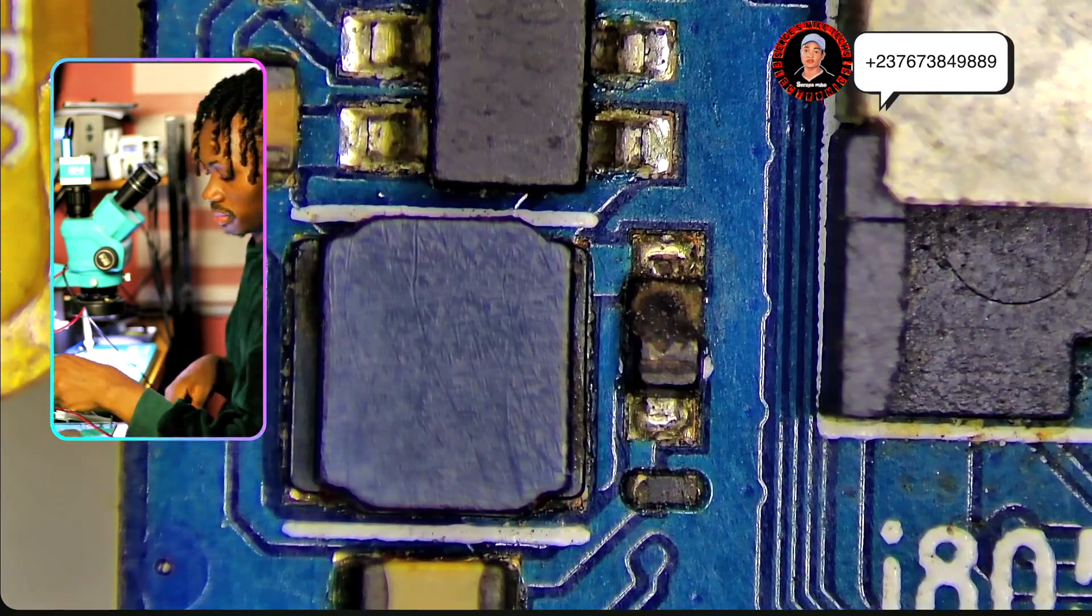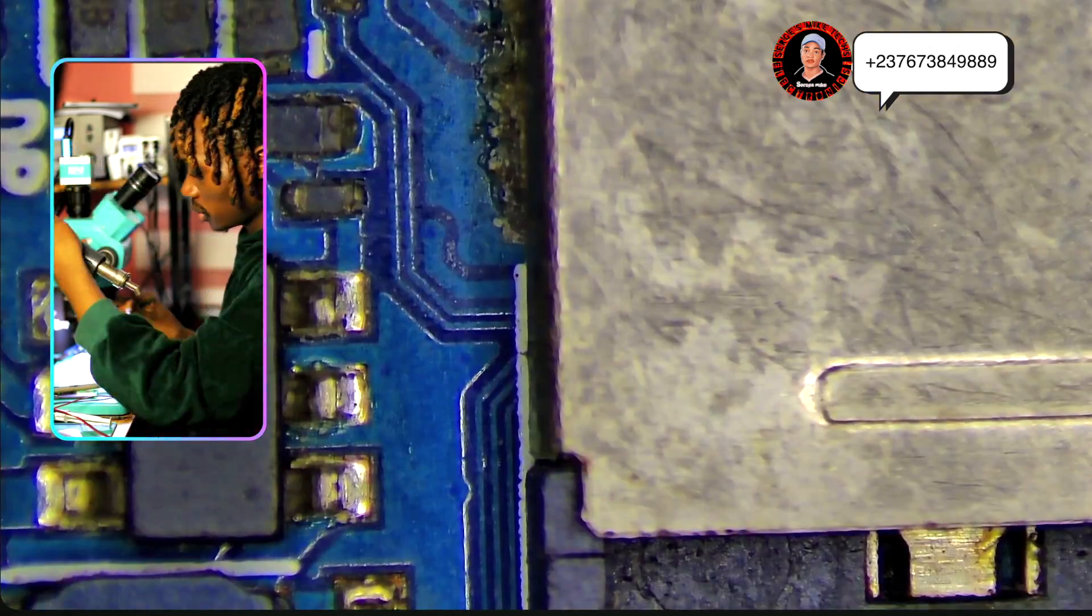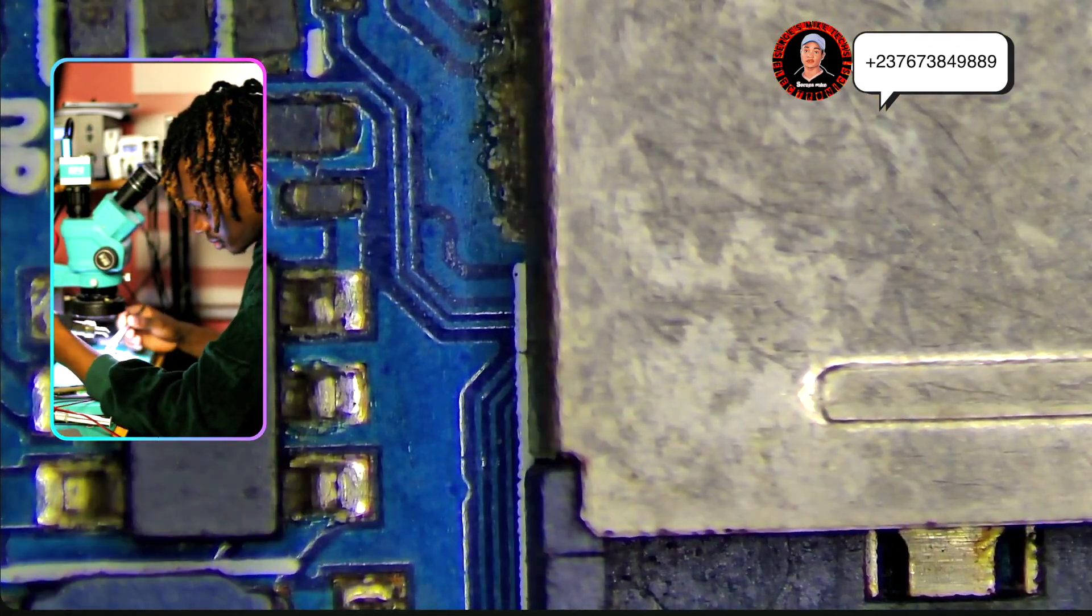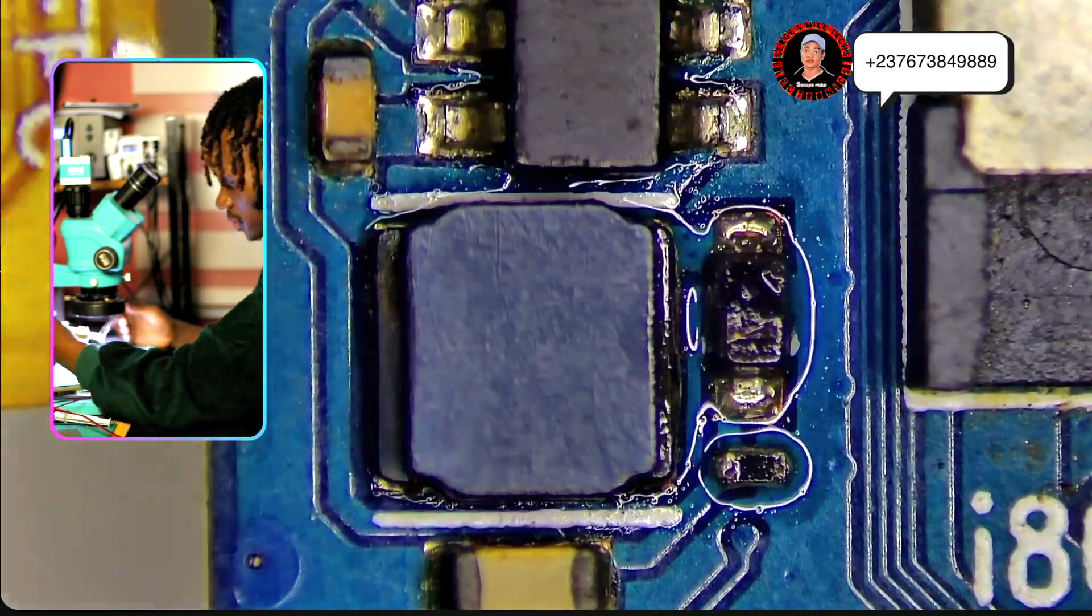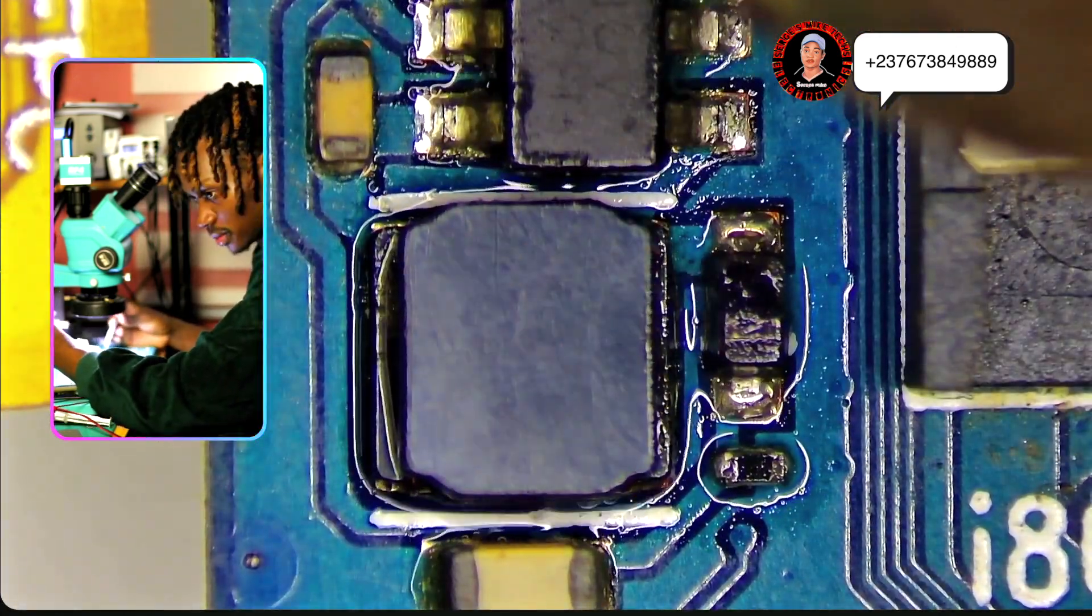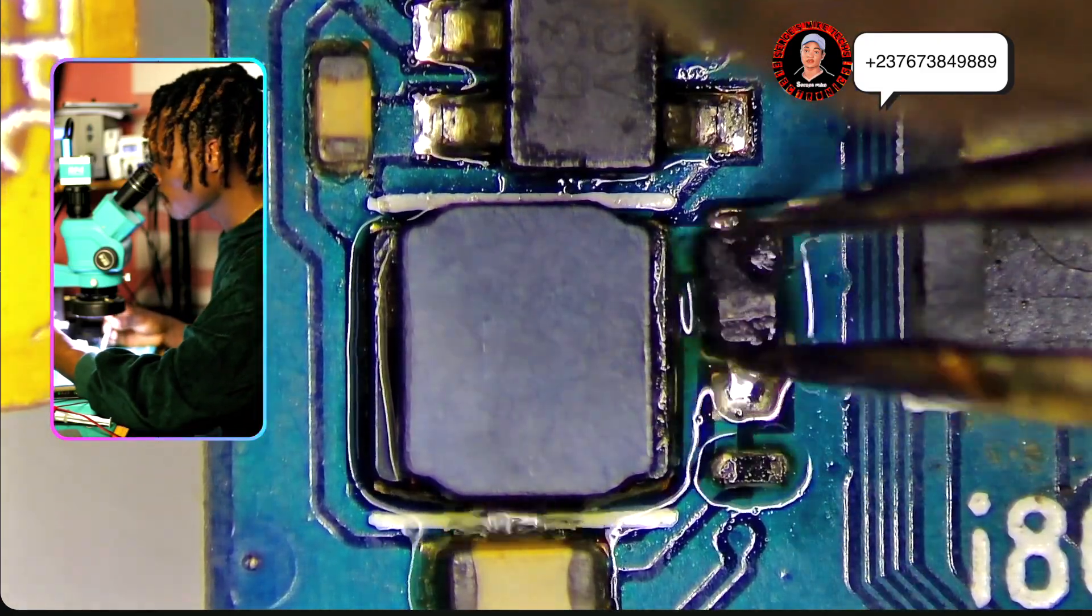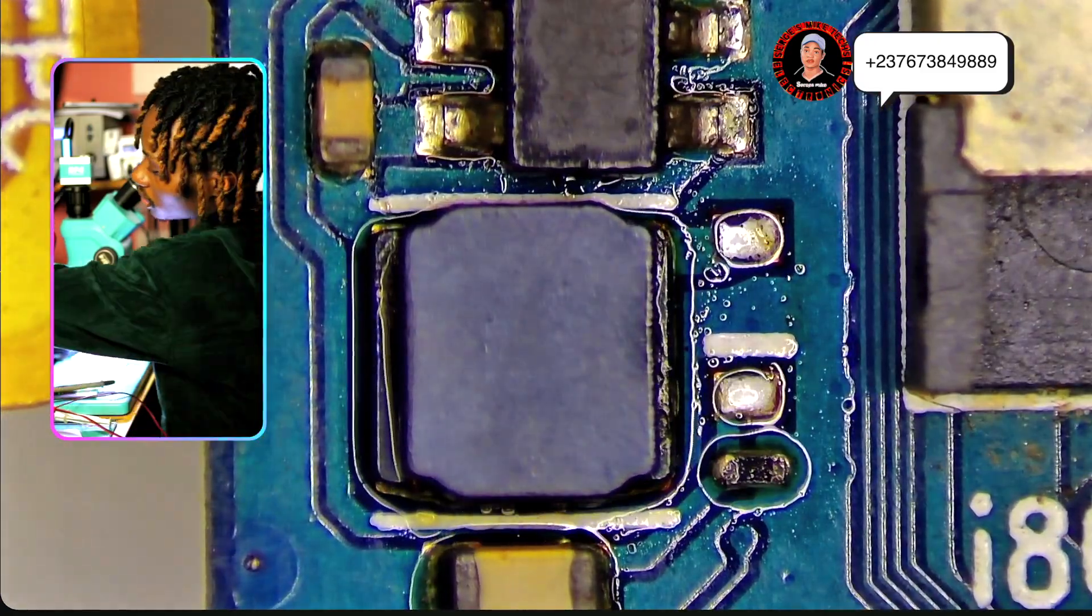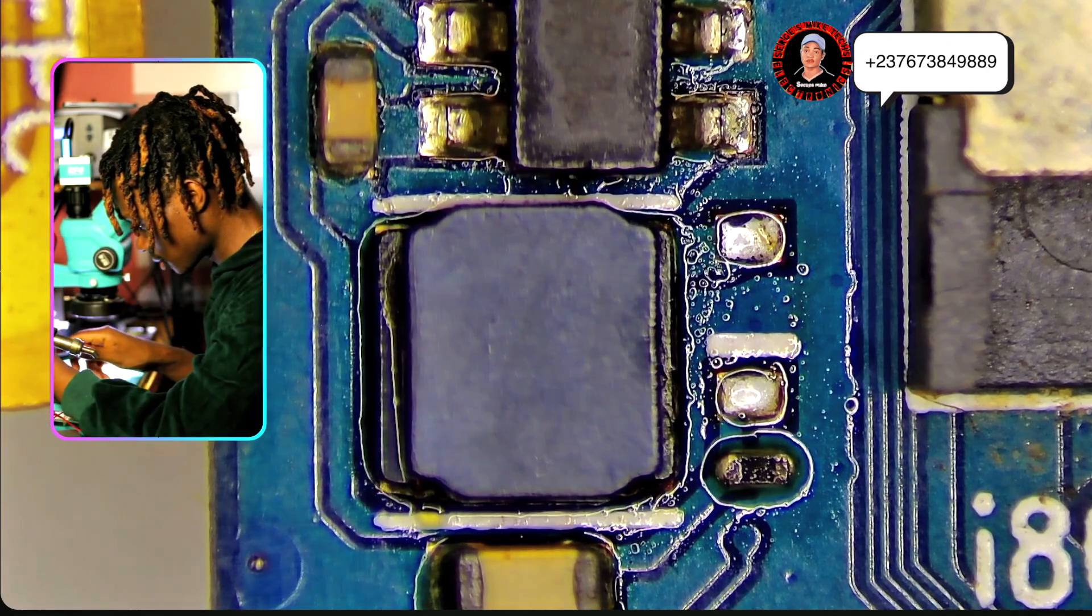What we decided to do first is to replace the diode. Let's just say okay the diode got bad, even though anyone who has been doing this and knows how the diode functions will know that there is something that actually caused the diode to burn. But first let's replace the diode and see how everything goes.